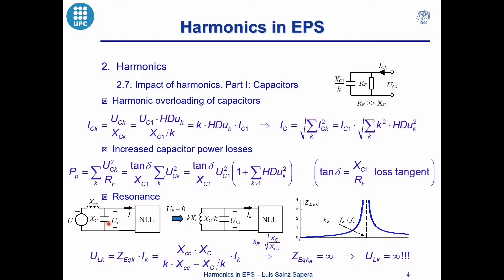Imagine that we have a capacitor bank to compensate the reactive power of an electrical installation and there is a non-linear load connected in this installation. If we want to calculate the harmonic voltage distortion at the non-linear load terminals by means of the approach presented in the videos about the resolution of harmonic problems, we must work with this harmonic equivalent circuit. The harmonic voltage is equal to the equivalent impedance of the parallel between the grid and the capacitor reactances multiplied by the harmonic currents consumed by the non-linear load. We can observe that for a certain harmonic the denominator of the equivalent impedance becomes zero, and then this equivalent impedance becomes infinite at that harmonic.